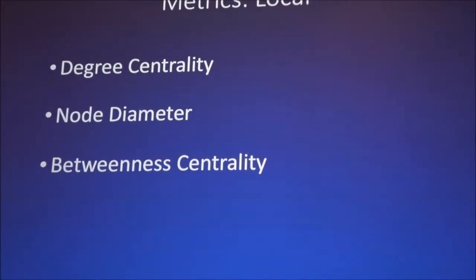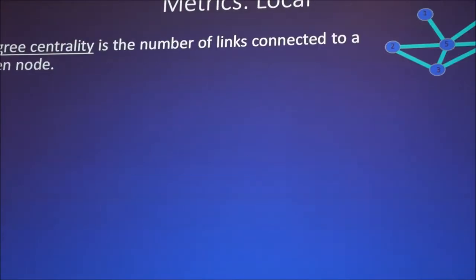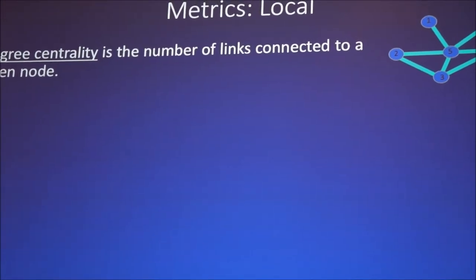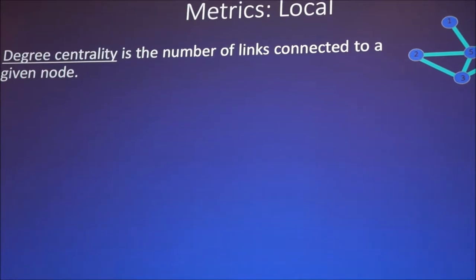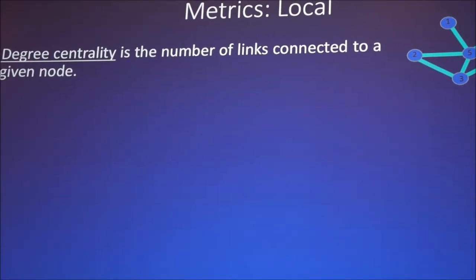So for the local metrics, I'm just going to touch on just a few, just three here. Degree centrality. First, this is the number of links that are connected to a given node, so essentially the number of nodes that a node is connected to. Pretty simple.